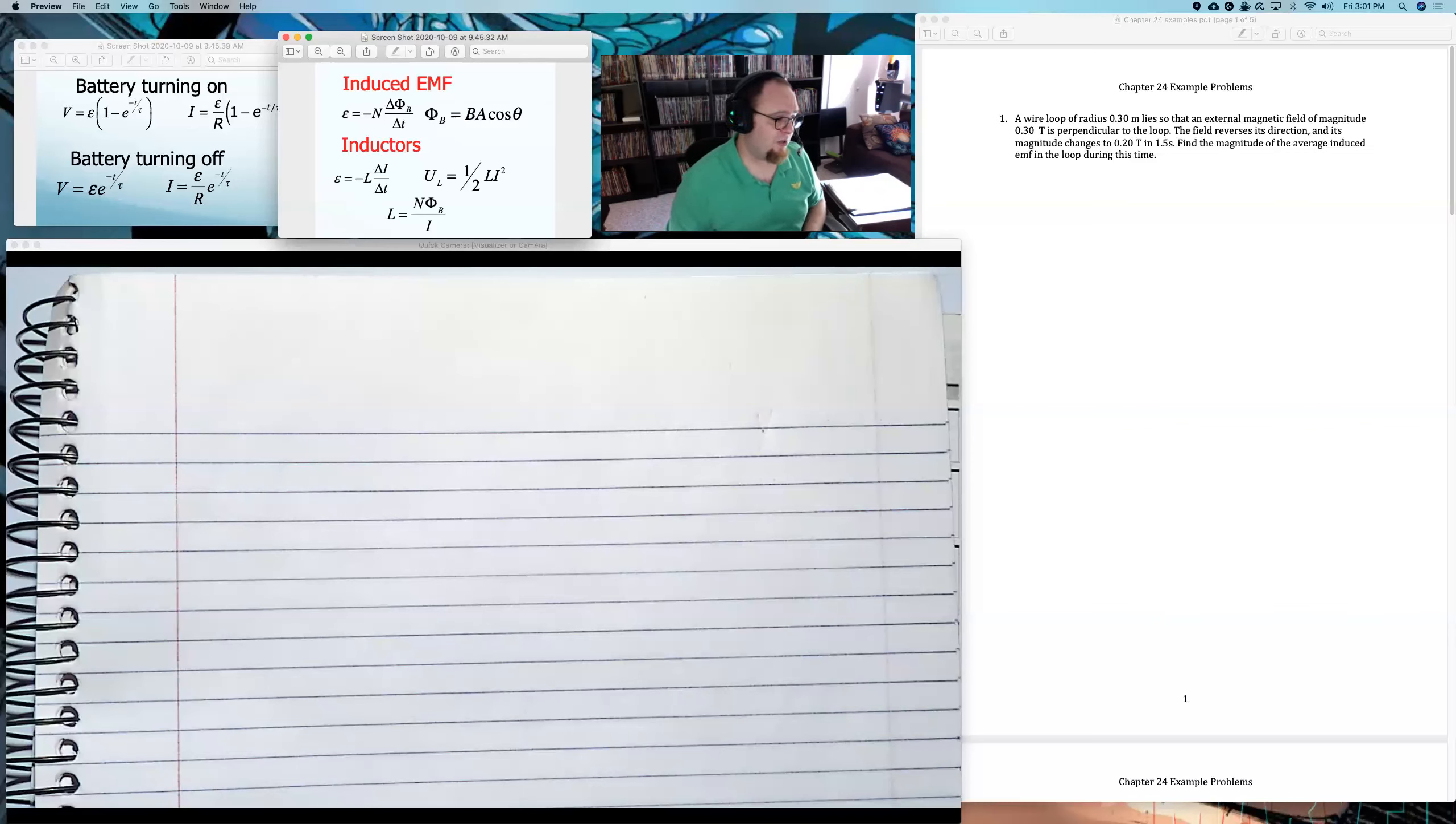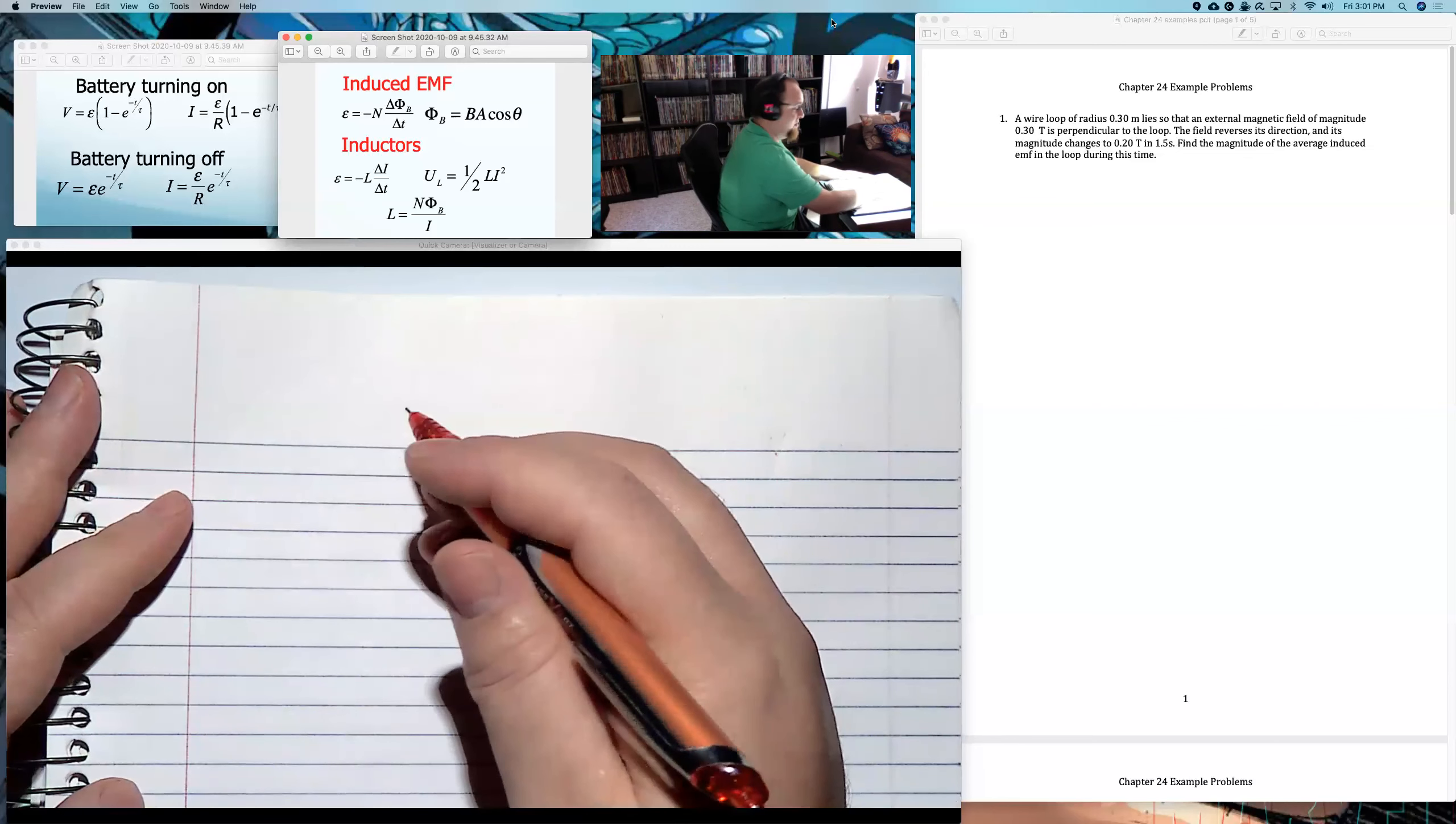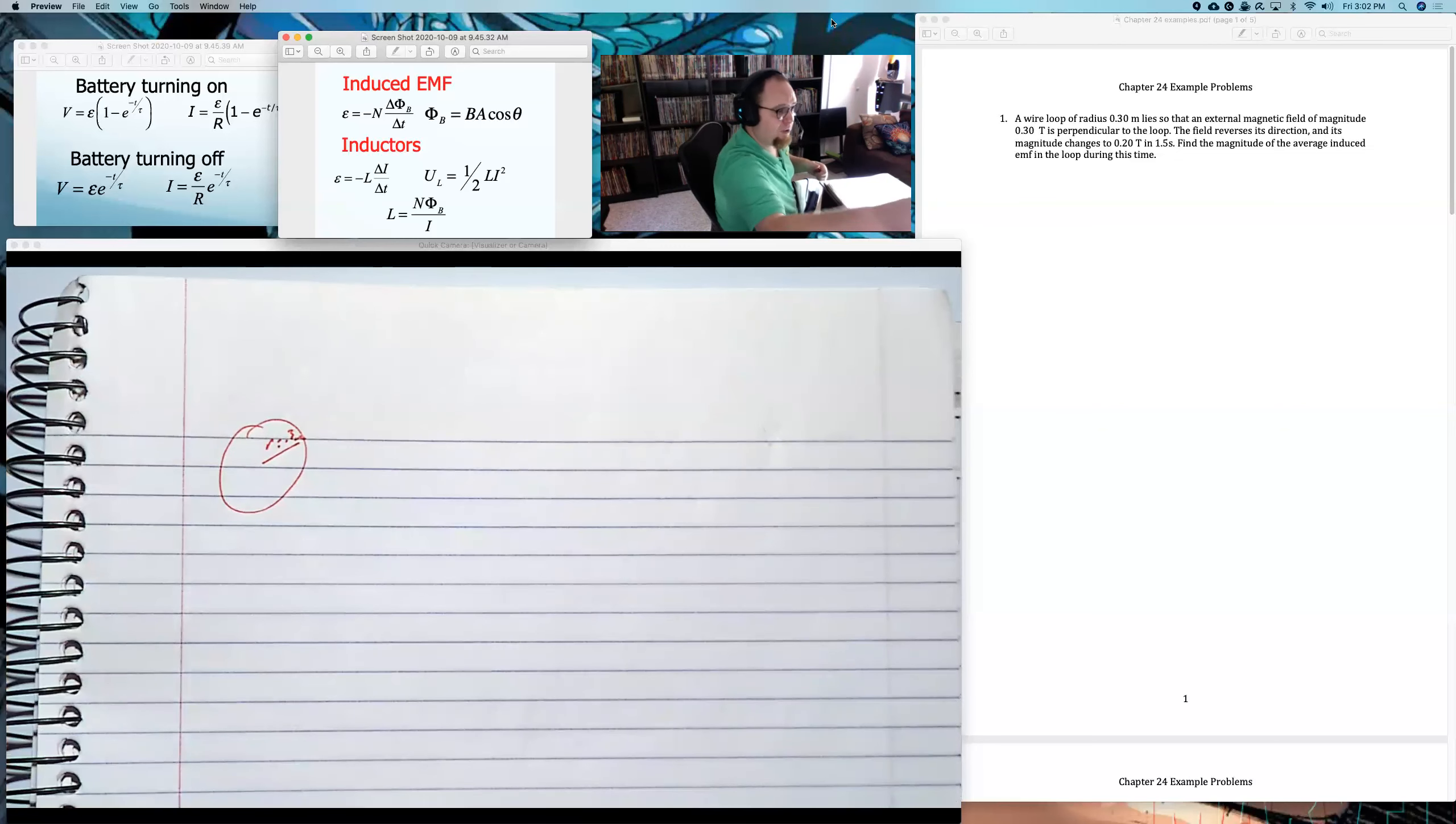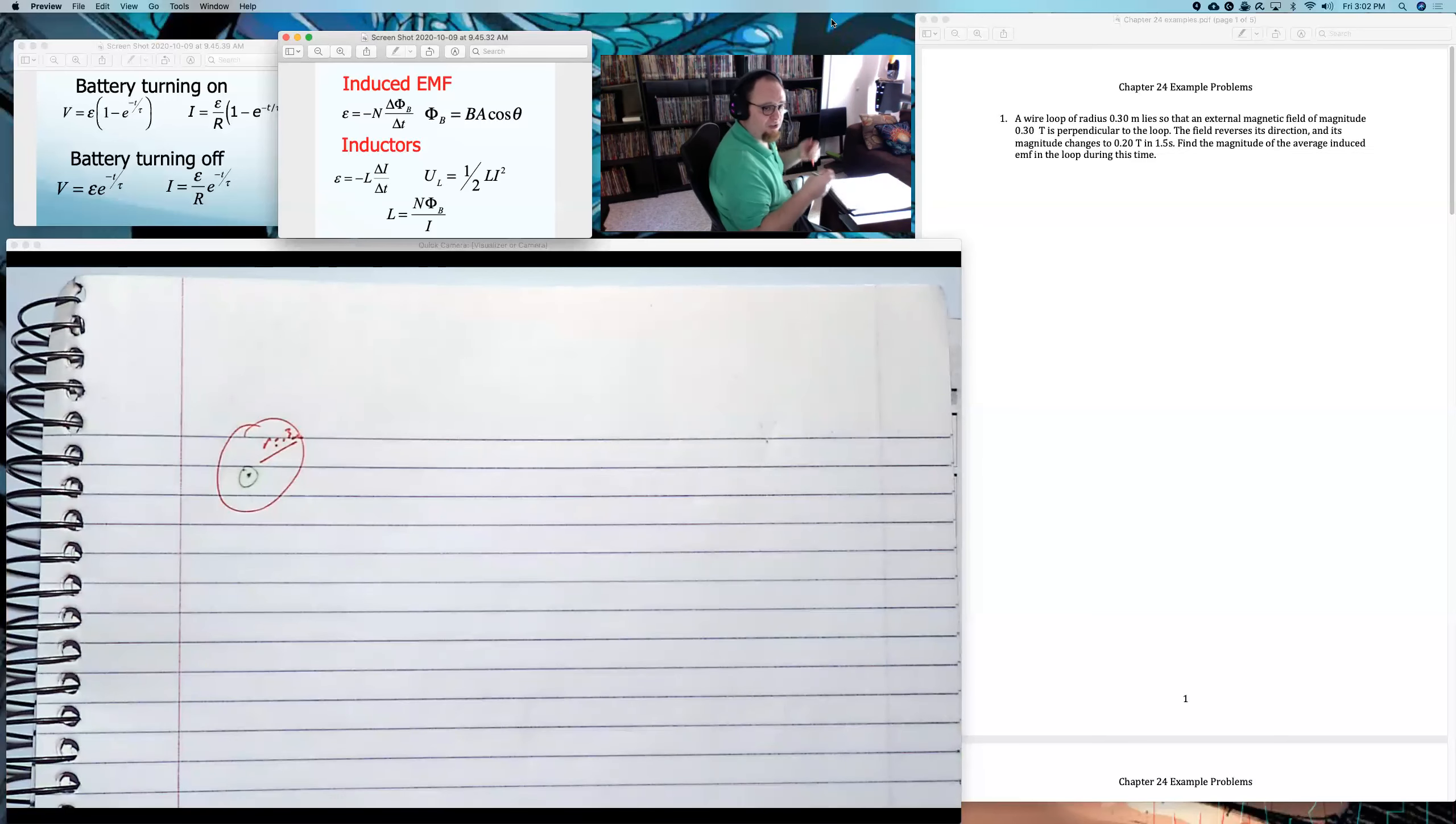These problems, like always, we can go through them. The second one is probably the one closest to what was on last semester's exam, but I will post last semester's exam at some point. Let's just start at the beginning. It says a loop of wire of radius 0.3 meters lies so that an external magnetic field of magnitude 0.3 Tesla is perpendicular to the loop. So I got a loop of wire, radius of 0.3 meters, and I have a magnetic field that's perpendicular. I'm going to say the magnetic field is just coming out of the page. It could be into the page. We don't know. It just says perpendicular, so that works.